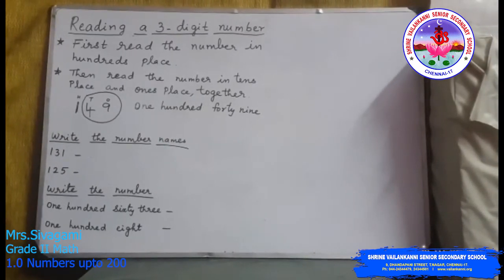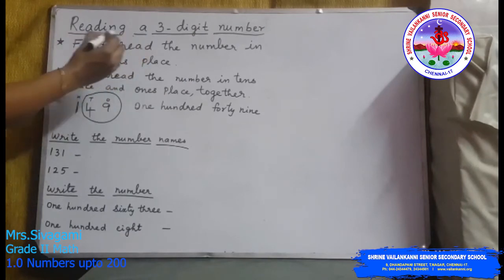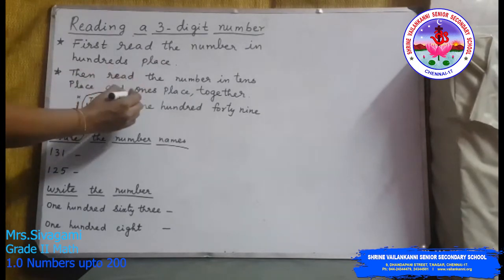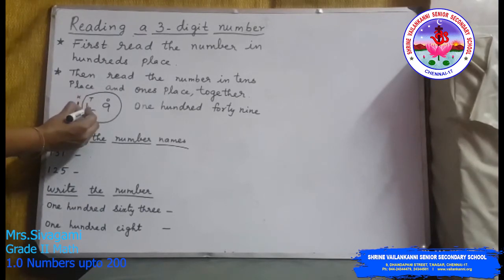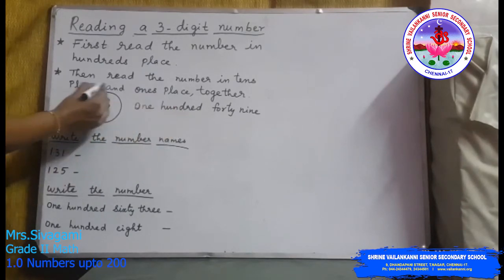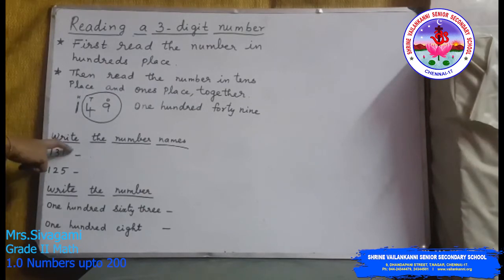Now we are going to see how to read a 3-digit number. First, read the number in the hundreds place. Then read the number in the tens place and ones place together. So first you read the hundreds place, then read the tens and ones place together. For example, it is 149.